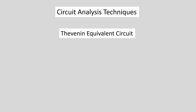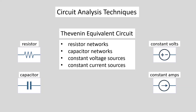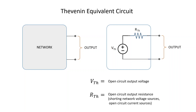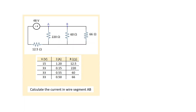Circuit analysis based on the Thevenin equivalent circuit. We will look at examples including resistors, capacitors, constant voltage, and constant current sources. The basic idea is to have a circuit problem and to distinguish between an output and the rest of the network. It's the network that is replaced by the Thevenin equivalent circuit, which consists of a constant voltage source in series with an impedance. Both the Thevenin volts and the Thevenin ohms are calculated based on the output being left open. Let's start with a resistor example that we would otherwise have solved with series and parallel combinations.